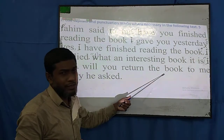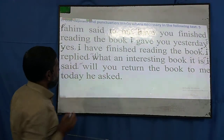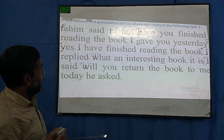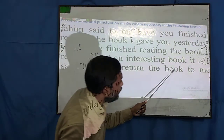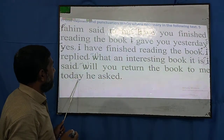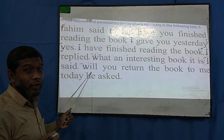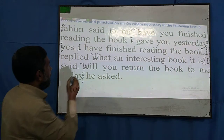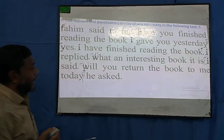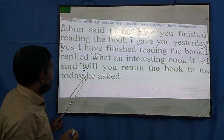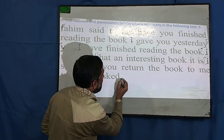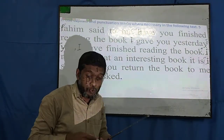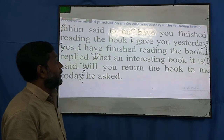Another speech starts, so again we open with an inverted comma and the first word 'W' is in capital: 'Will you return the book to me today?' This speech starts with an auxiliary verb, so we give a note of interrogation, and we close the speech with another inverted comma. Then 'he asked,' full stop. If we use it just this way, the answer will be right.